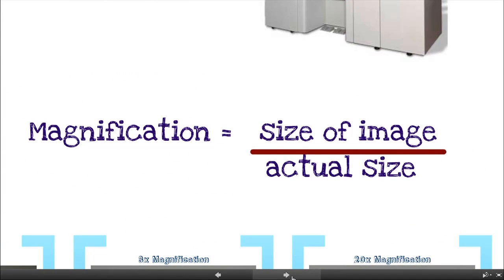So here's a formula for magnification. Now I don't think you really need to remember this. I think it's pretty intuitive actually. So magnification is the size of the image, the size it appears under the microscope, divided by the actual size. And that makes sense.